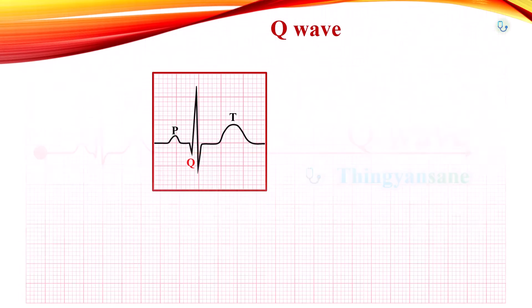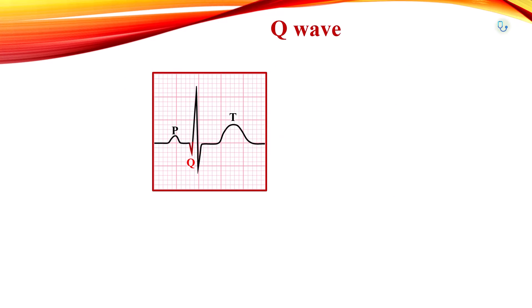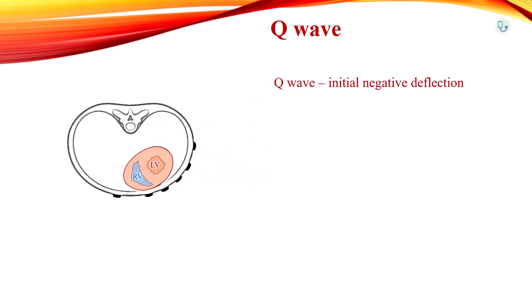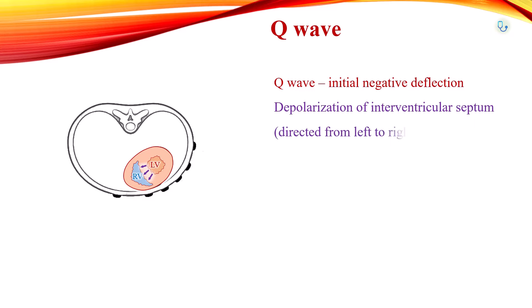A Q-wave is an initial negative deflection of the QRS complex. It represents the depolarization of the interventricular septum. The direction of septal depolarization is from left to right.